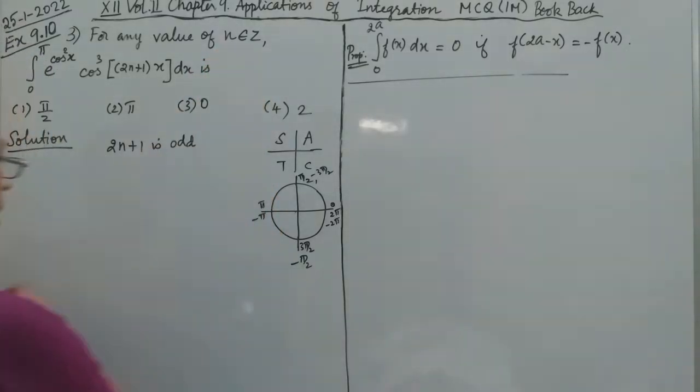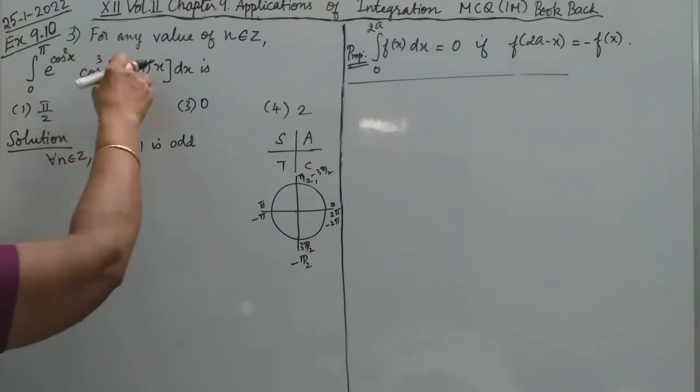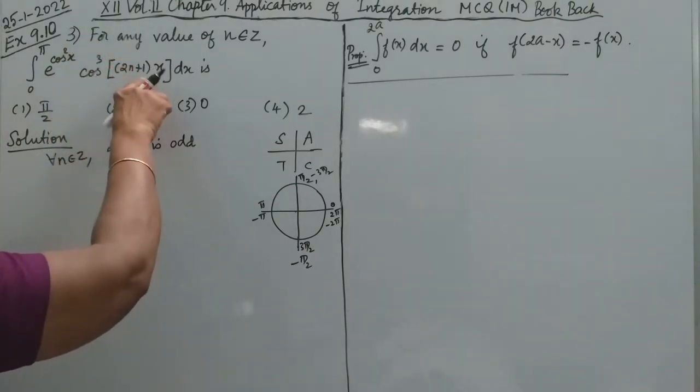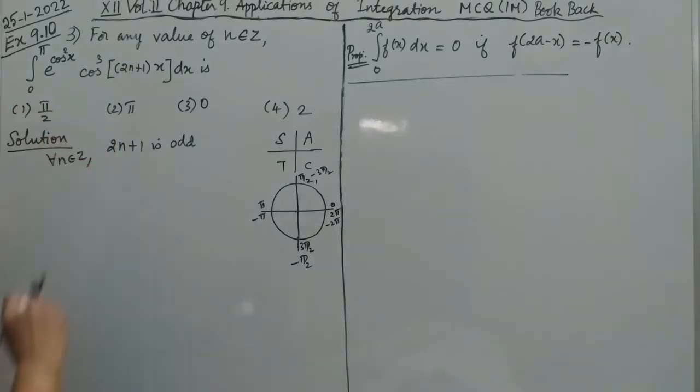So here n belongs to Z. For all n belonging to Z, it is 2n+1 times. What we have is cos³(2n+1)x. So what do we do? We have very useful properties.